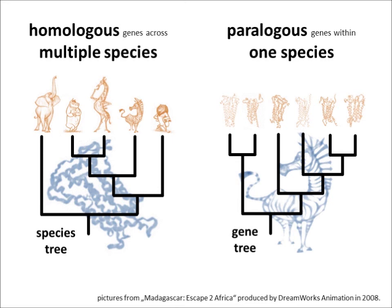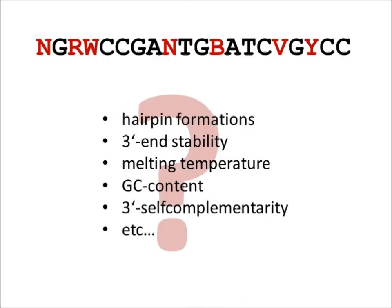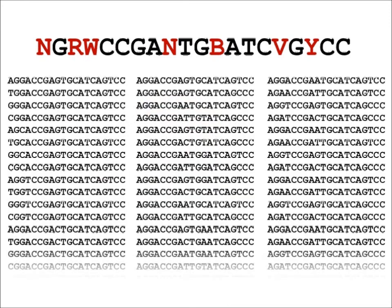However, primer design can become a challenge if the degree of sequence divergence demands the use of degenerate primers. The first problem is to test the characteristics of degenerate primers, which actually means that each possible primer sequence has to be assessed separately, which is particularly crucial during the assembling of proper degenerate primer pairs.